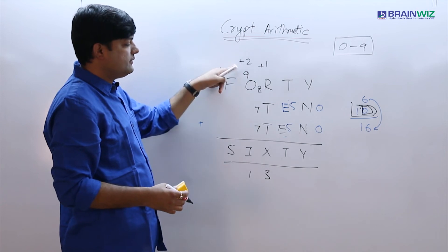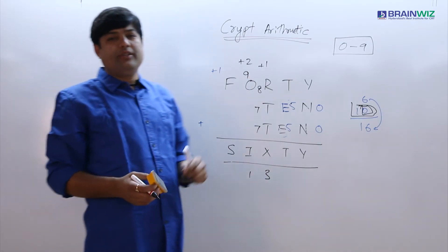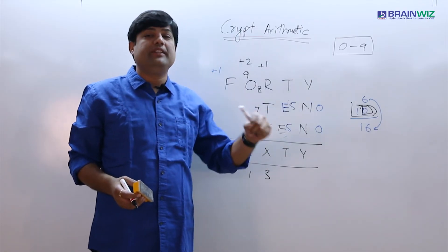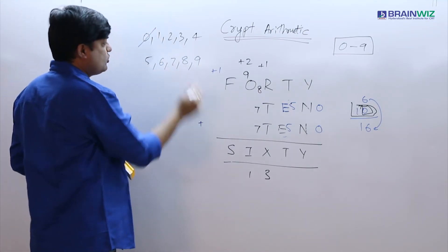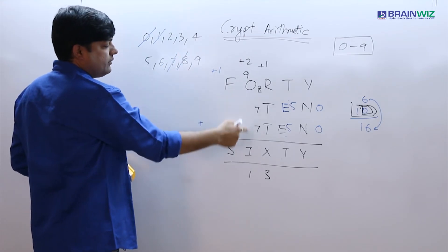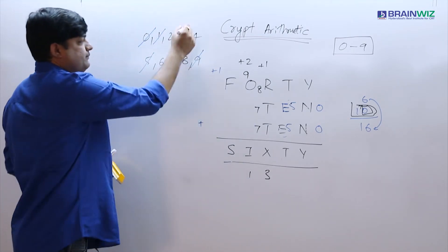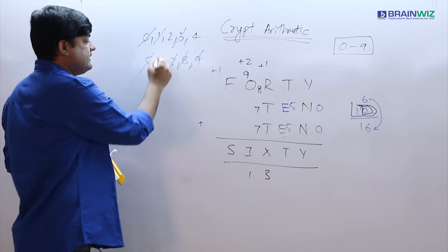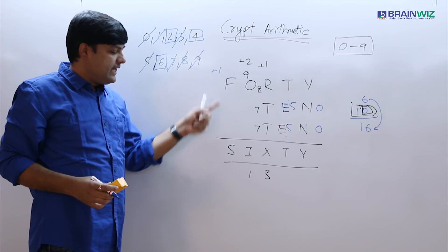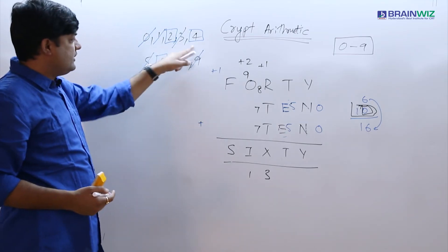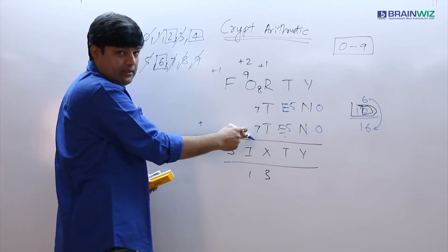We get 3 and a carry of 2. Now let us check the digits we have used so far: 0, 1, 3, 5, 7, 8, 9. The remaining digits are 2, 4, and 6. But the relationship between S and F requires S to be exactly 1 more than F. Among 2, 4, and 6 there is no pair with a gap of 1, so this trial is wrong.